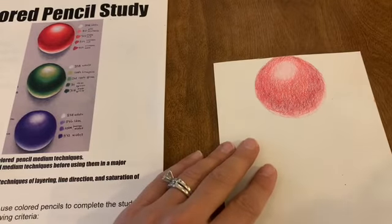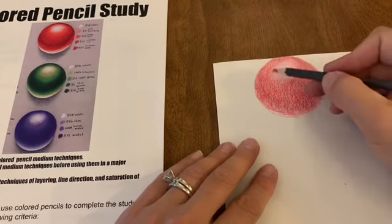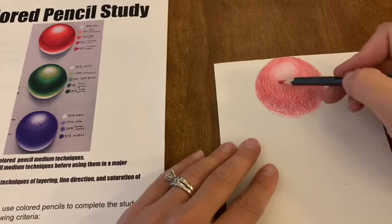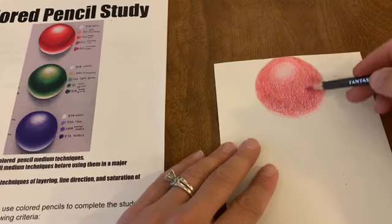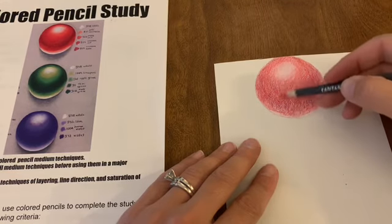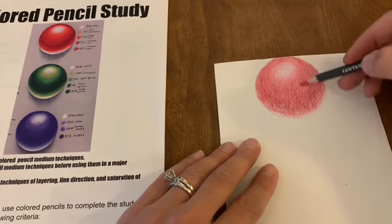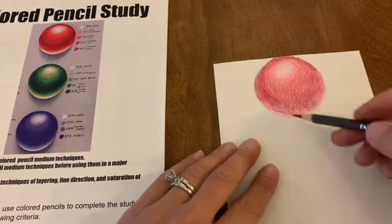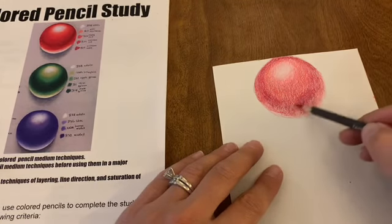What you don't want your sphere to look like when you're finished is have a striping effect. You want it to look like it's gradually fading from one value to the next, so you need to go back in with your lighter values and very lightly blend those transitions so that you have a nice gradual transition from the lights to the darks and you don't end up with stripes.